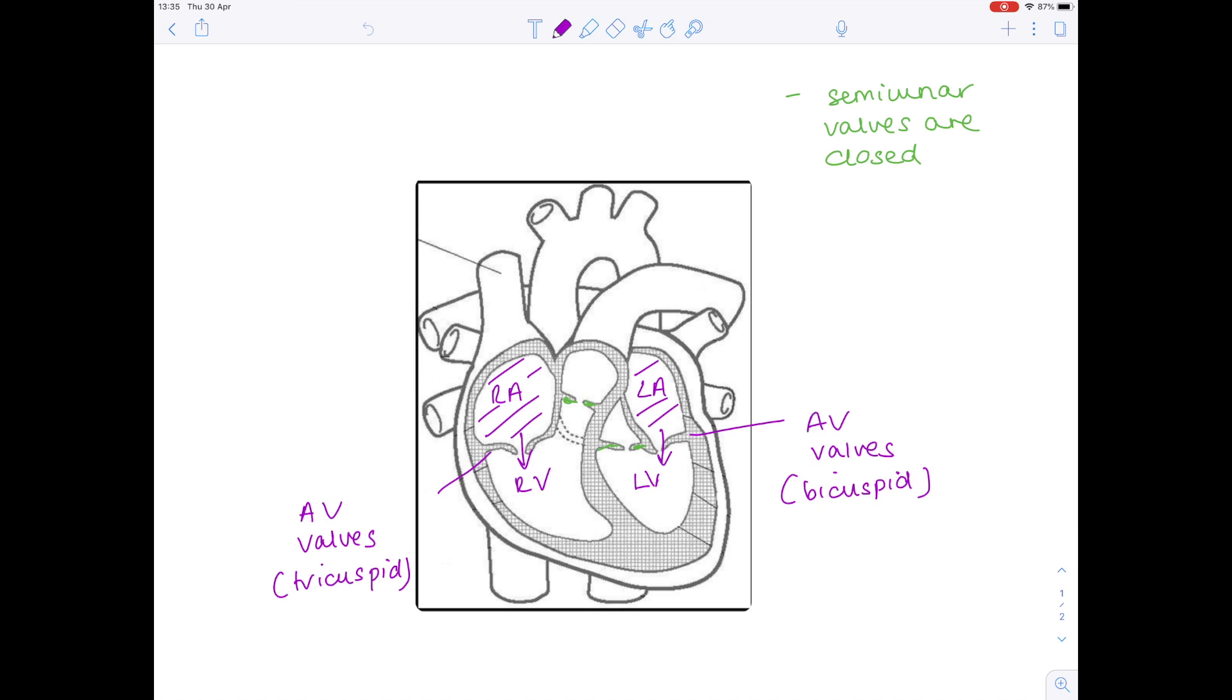meaning that blood can flow into the ventricles. We know that at this point the semilunar valves are closed to stop the blood leaving the ventricles prematurely. And then when that ventricular pressure is greater than the pressure within the aorta, we know that those semilunar valves open in order to allow the blood to leave the ventricles.